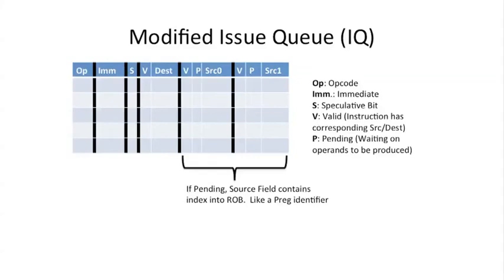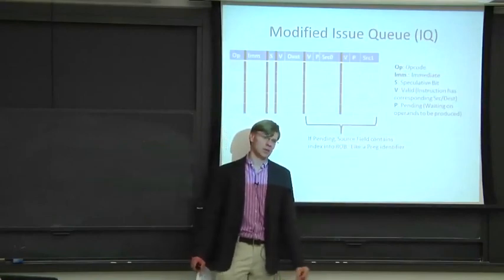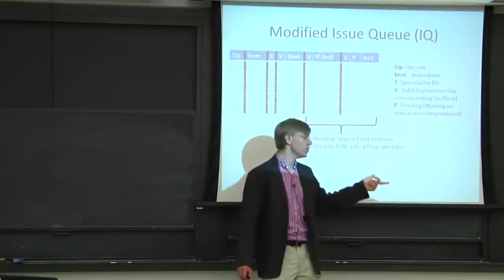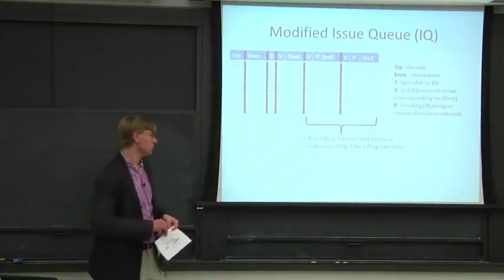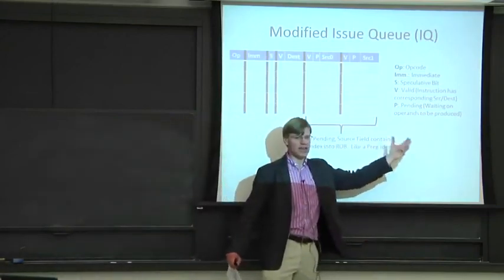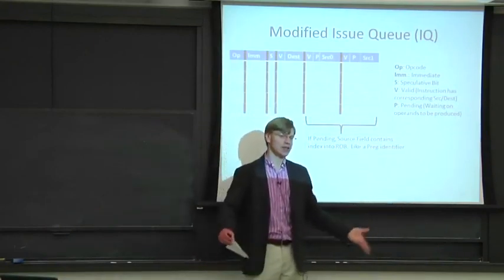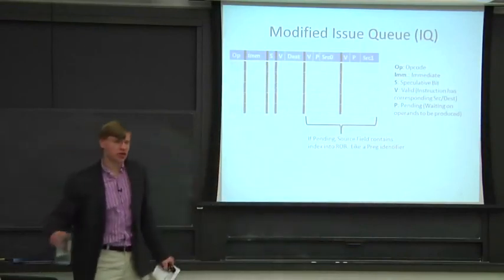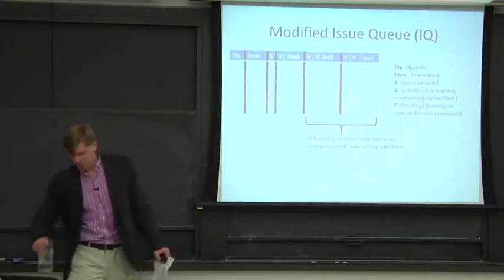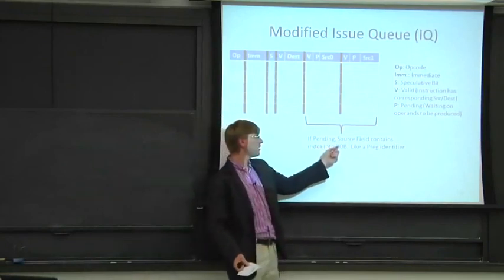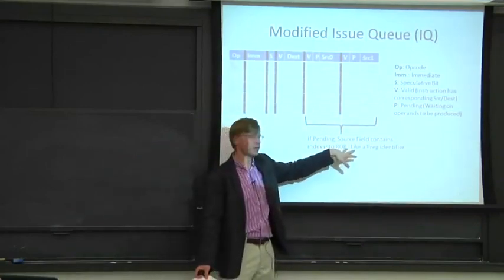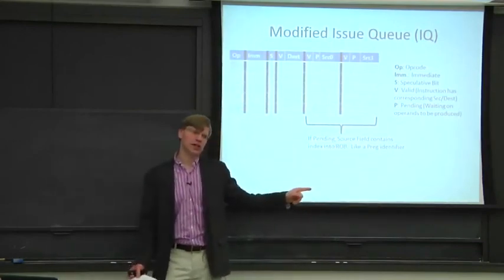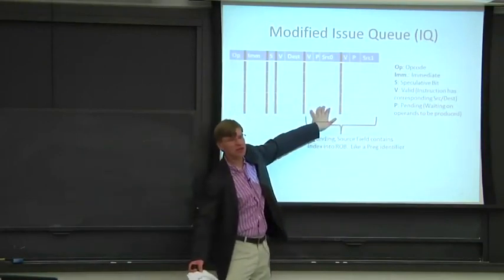If you go back and look at the Thomas Tomasulo algorithm paper, they broadcast commits that are happening, and those commits end up in the reservation station as actual values. We're going to store in the two source operand fields the values if we get a committed instruction. If the instruction is pending and in flight, we can't just get the value because it's being calculated. Instead, if it's pending, our source field is going to store an identifier into the reorder buffer, naming the exact instruction that has to complete in order for this value to be ready to execute.